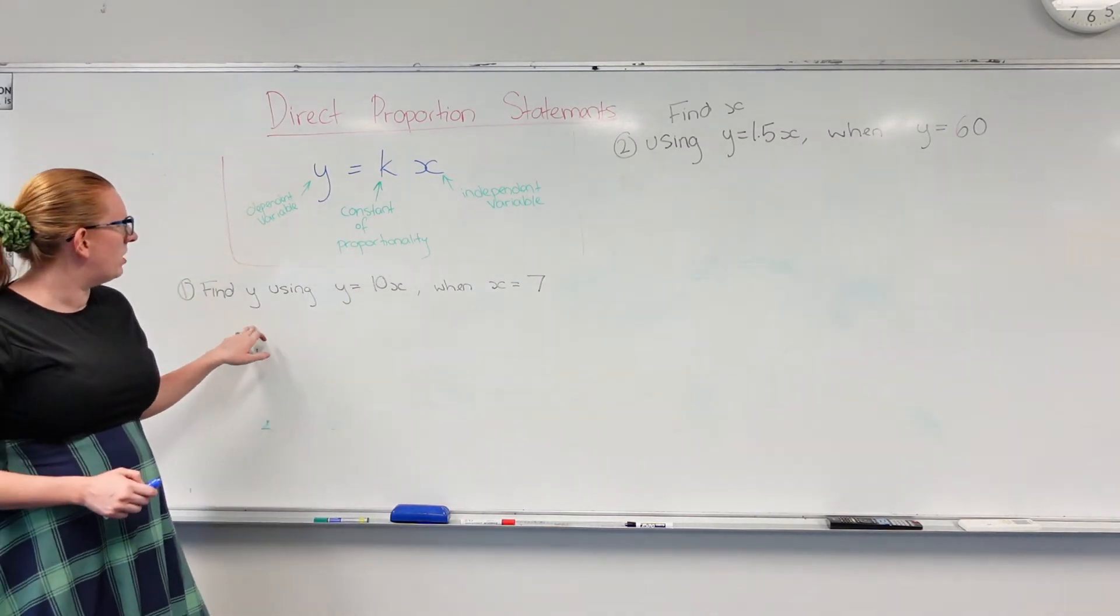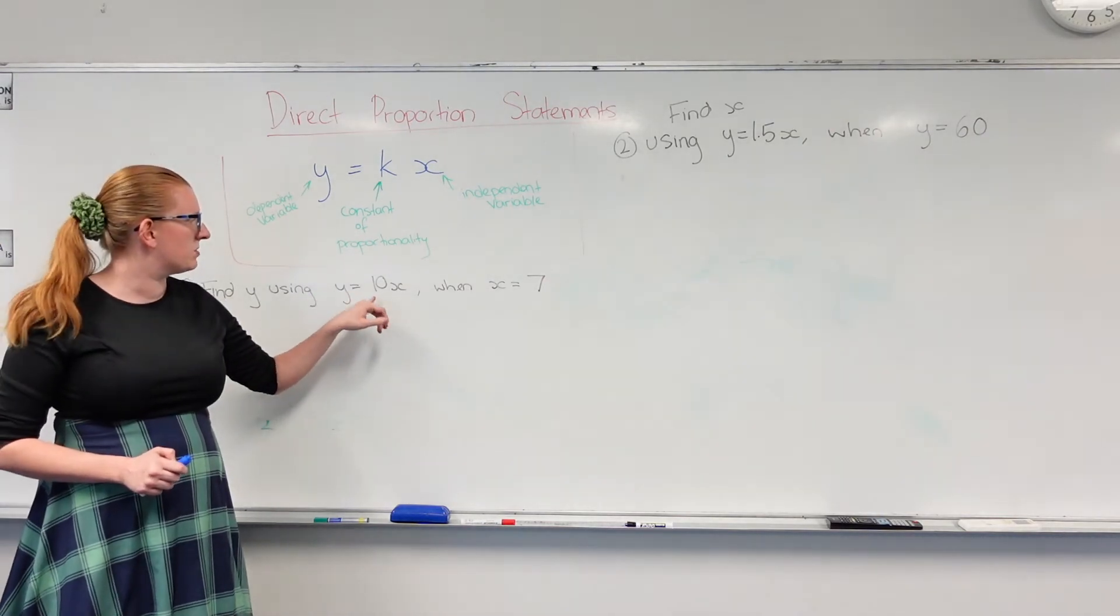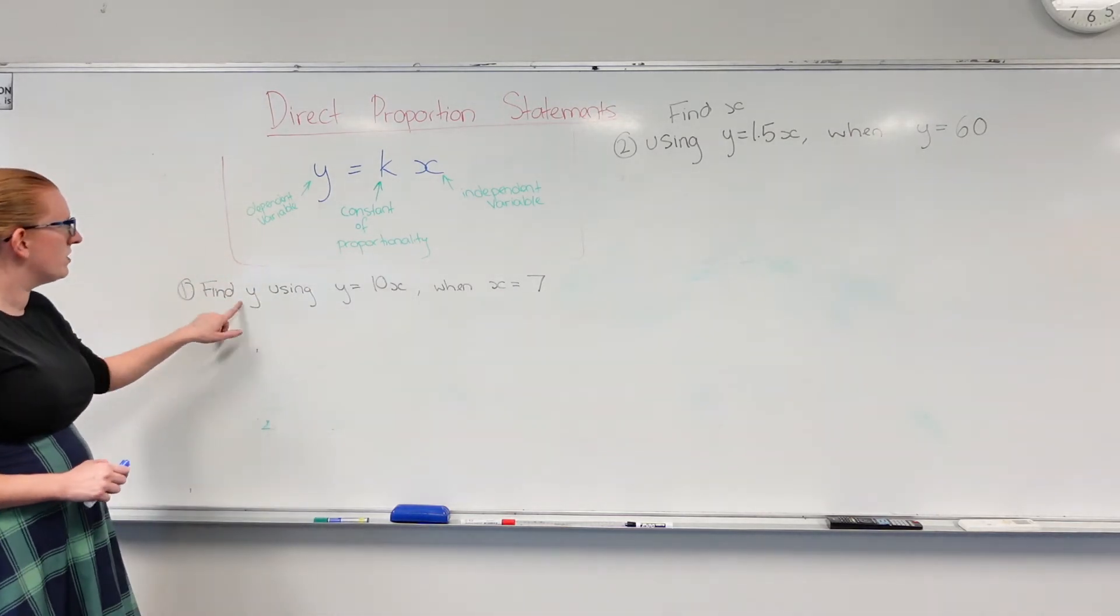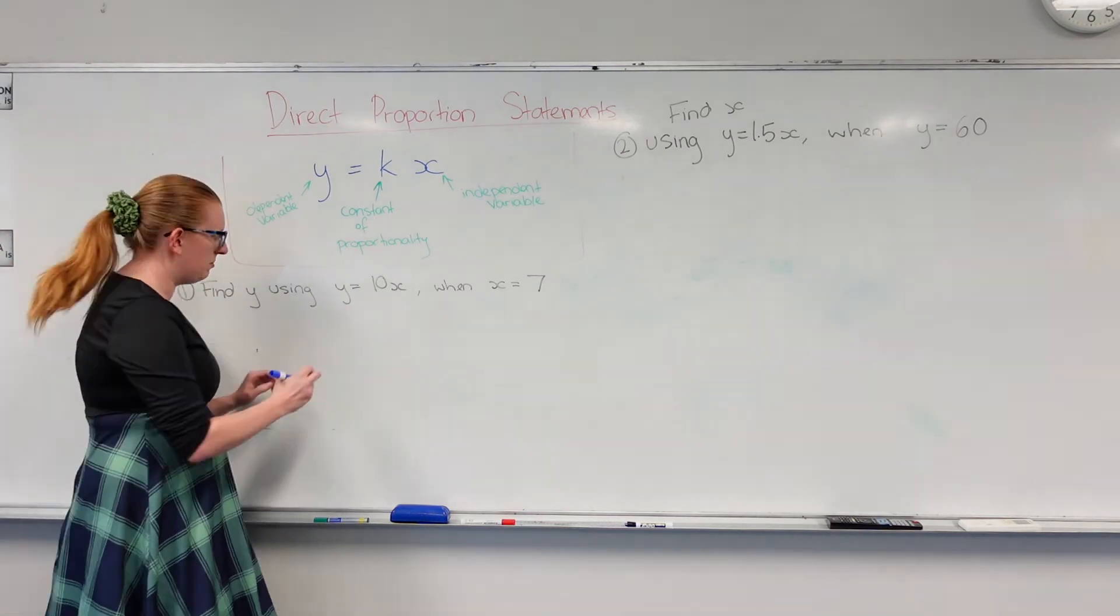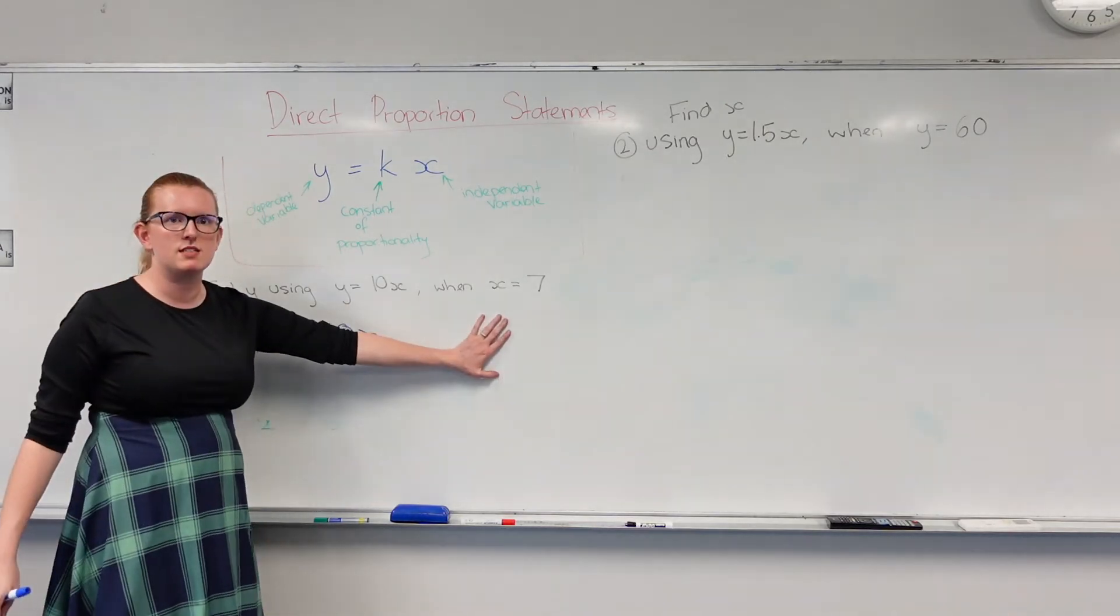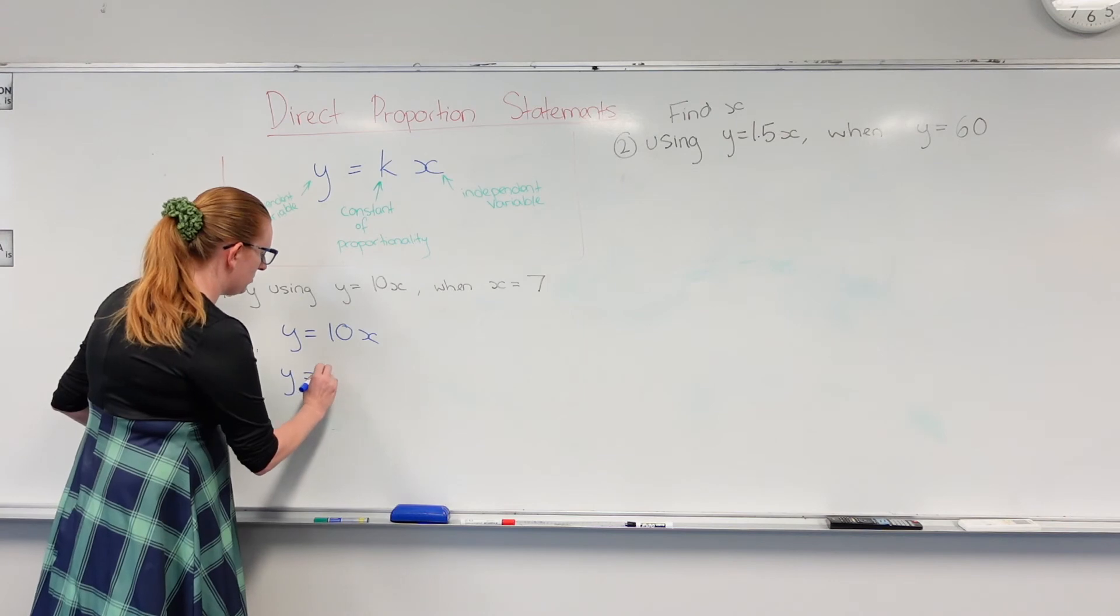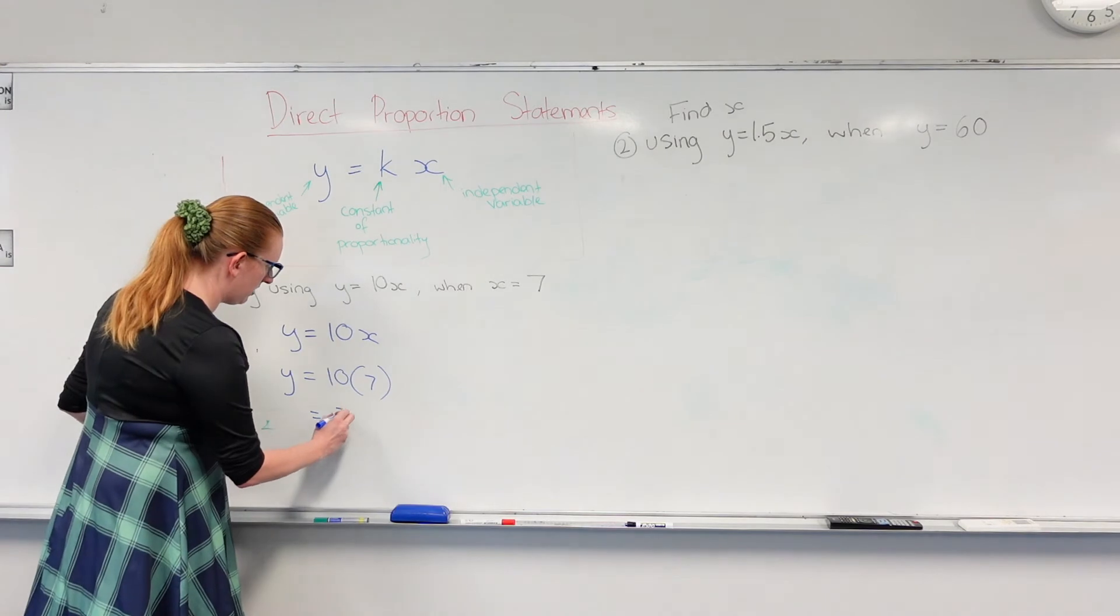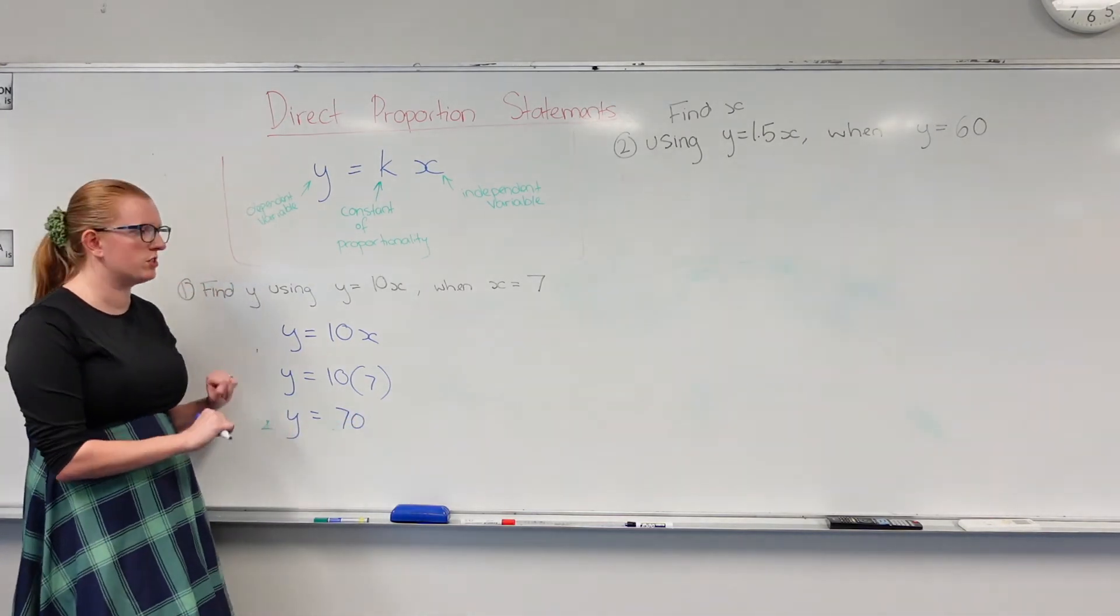So it says find y using our direct proportion statement y equals 10x when x equals 7. So we're just trying to find the value of y. We've got our direct proportion statement that we're going to be using, so y equals 10x, and they tell us what x is, so we're just going to sub that in. So y equals 10 times 7. So 10 times 7 gives us 70, so y equals 70. There we go, solved that question, super easy.